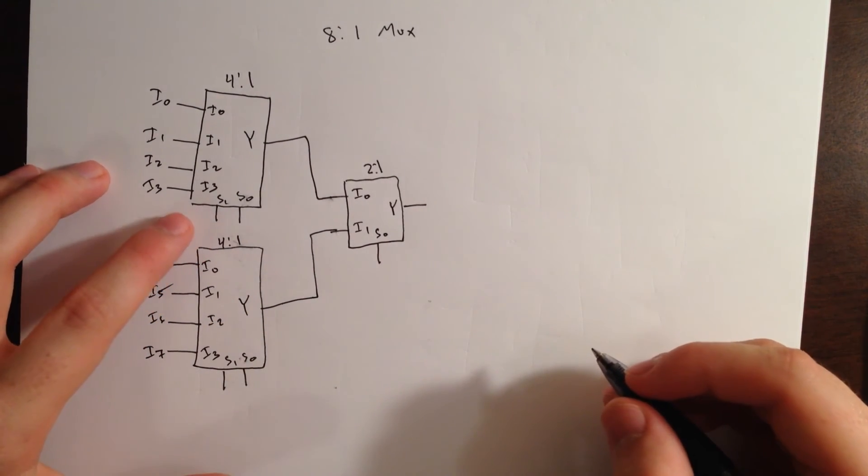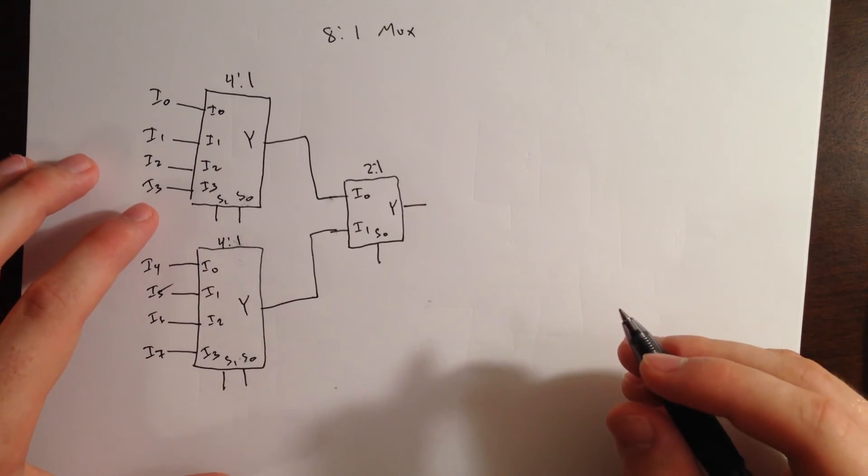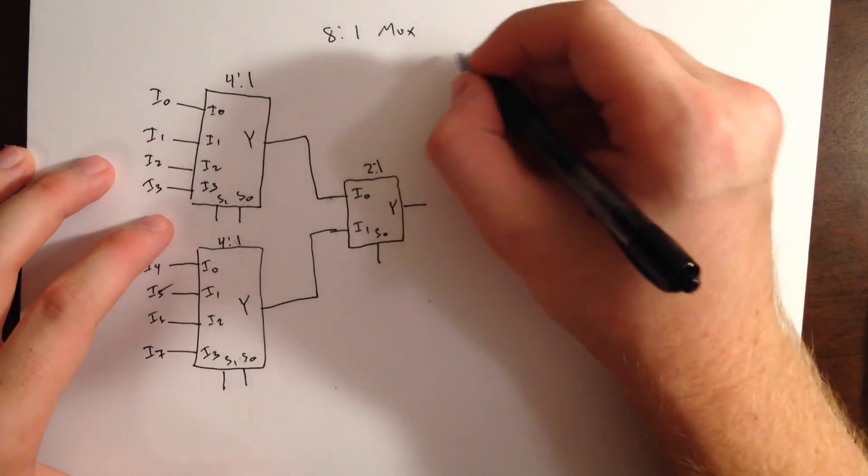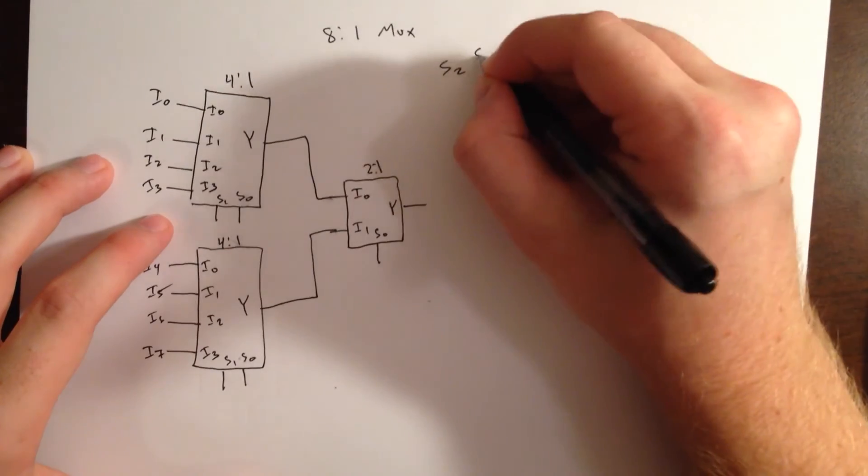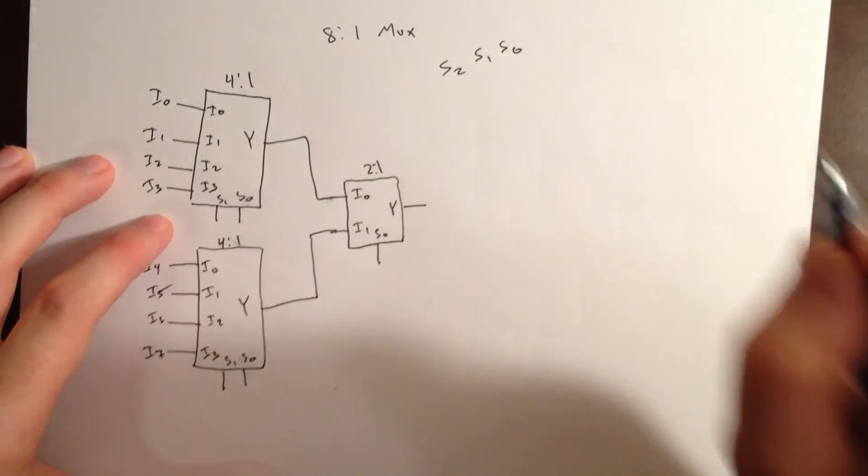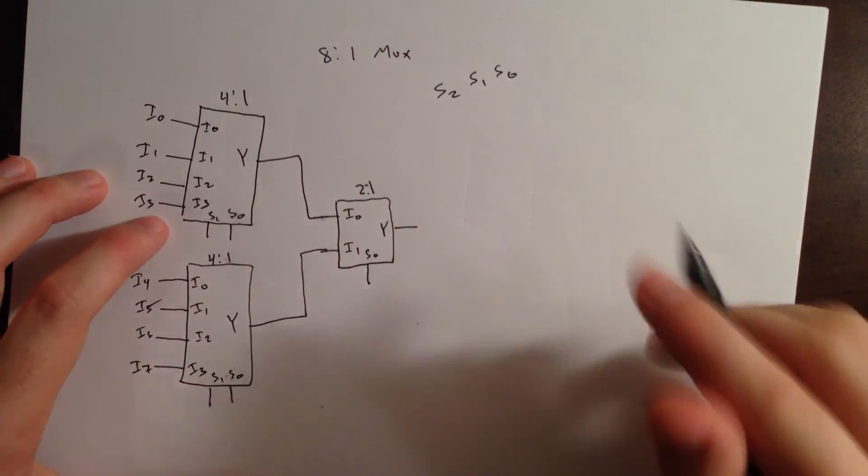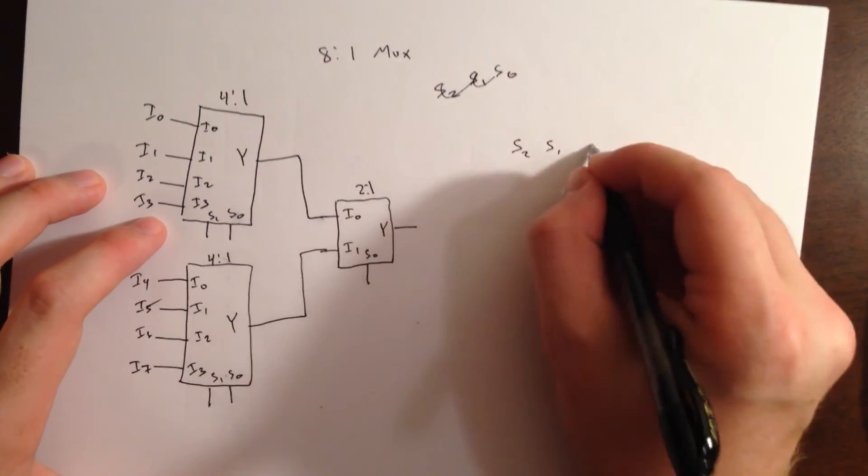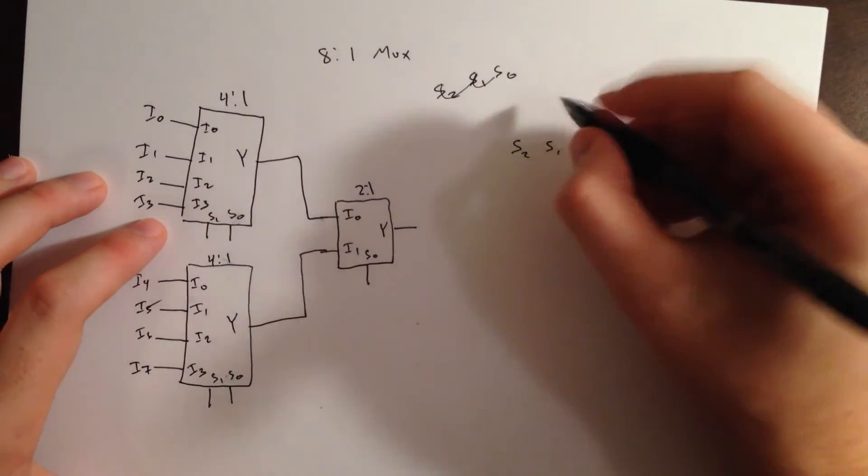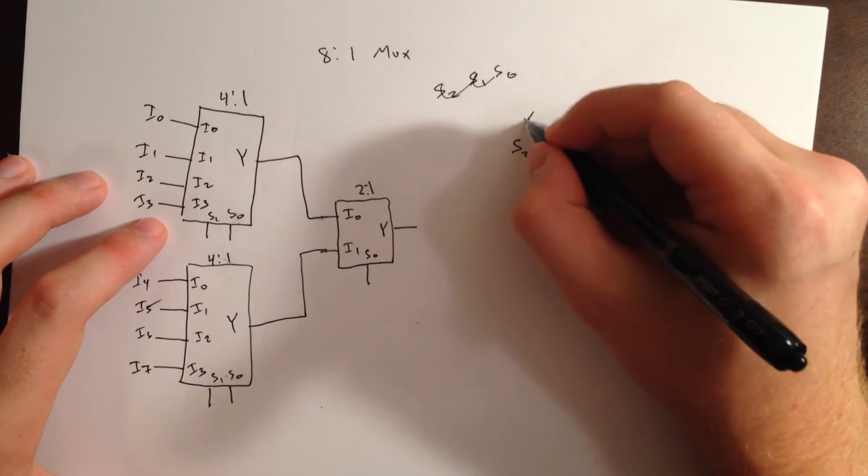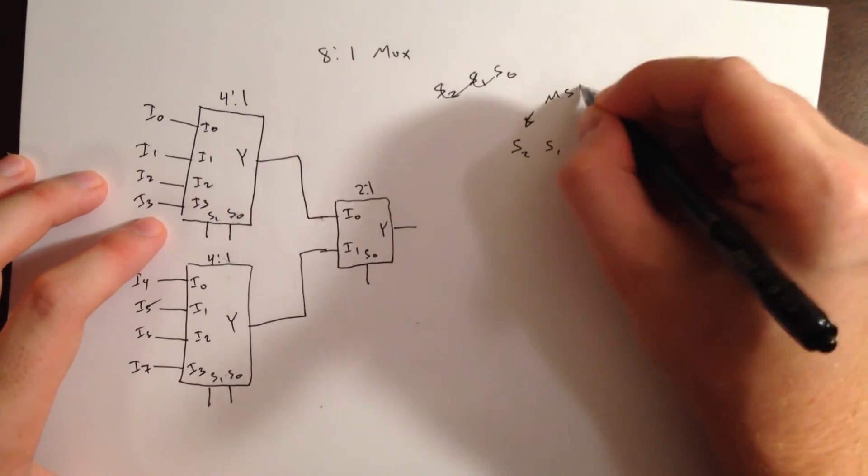And, now, we will have three possible binary combinations for the 8:1 multiplexor. We will have S2, S1, and S0. I'll draw that more straight. And, our S2 is our leftmost, so this is our most significant bit.